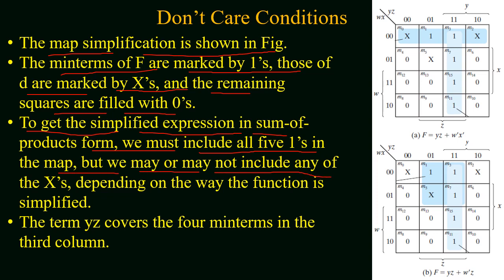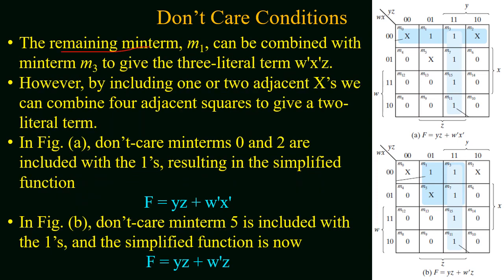If we make a group of four min terms present in the third column, this gives us a simplified term y·z, and four out of five min terms will be covered, leaving a single min term remaining. The remaining min term m1 can be combined with min term m3 to give a three-literal simplified term w'x'z. However, by including one or two adjacent don't cares, we can combine four adjacent squares to get a two-literal simplified term. As per the rule of simplification, the more adjacent squares that are included, the more simplified the term.